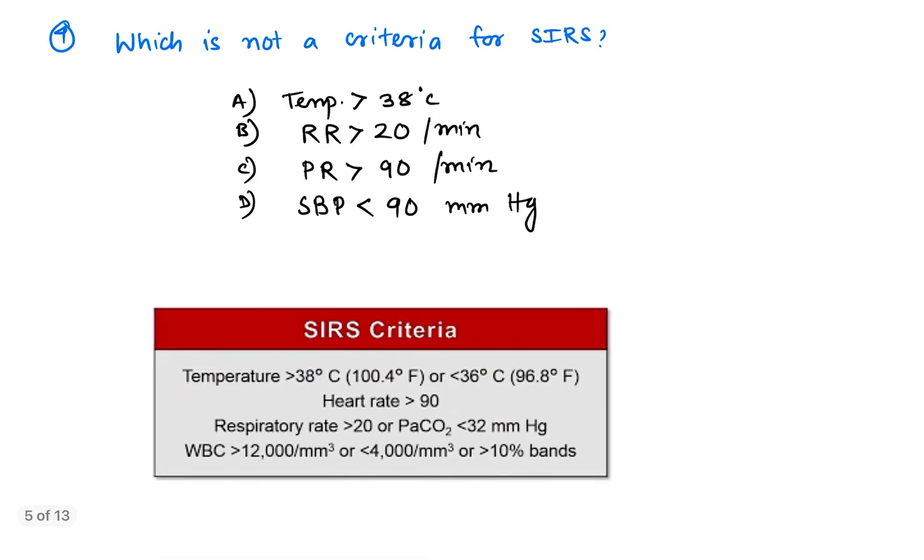Question number four: Which is not included in the criteria of SIRS, systemic inflammatory response syndrome? As you can see here, SIRS criteria includes either temperature more than 38 or less than 36 degrees Celsius, heart rate or pulse rate more than 90, so these two options are right, and respiratory rate also more than 20, so this is also right.